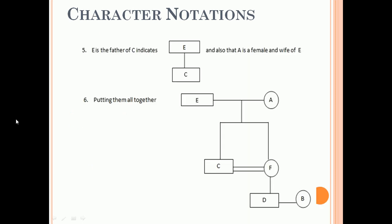Again, E is the father of C indicates E is a male and father of C, and also that A is a female and wife of E. So E is the father, A is the mother, and C and F. Again D and B are here. So this completes the family tree and we can now answer any question based on this tree.